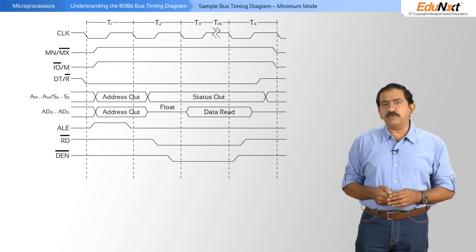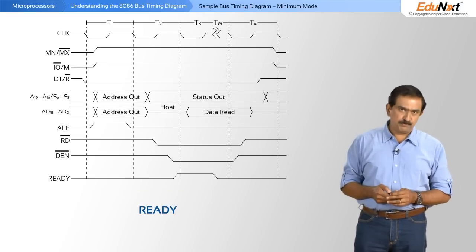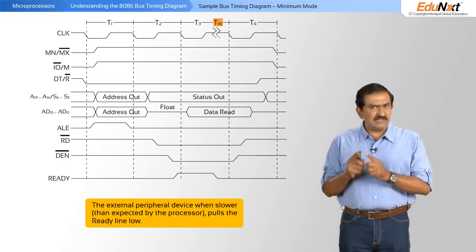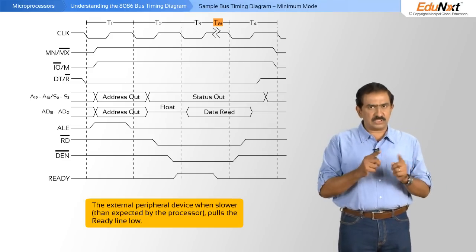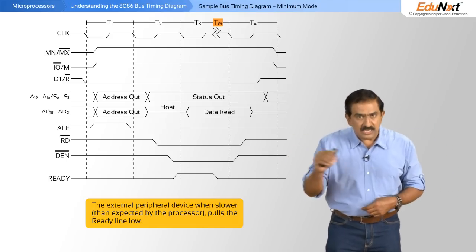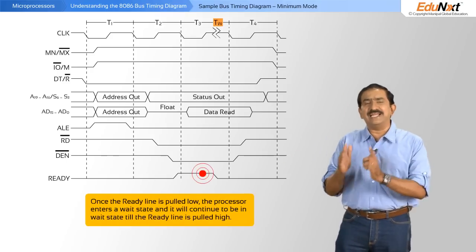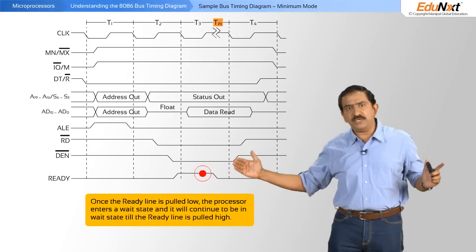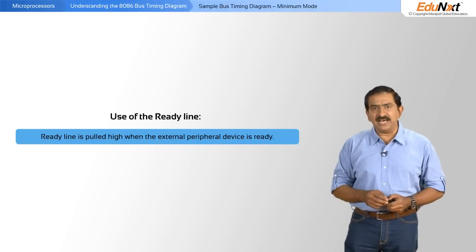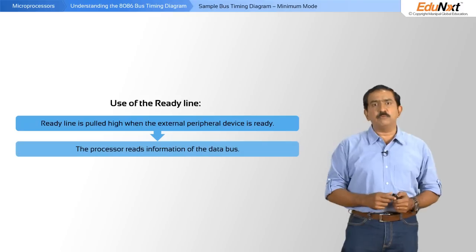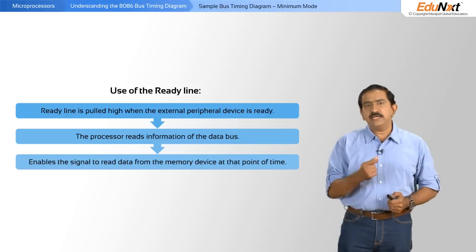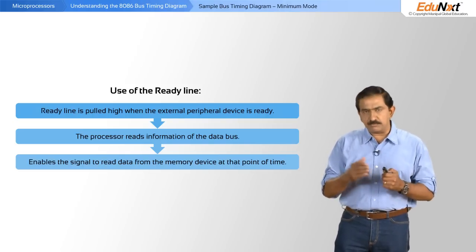The last signal in this set of waveforms is something called ready, which relates to the T-wait clock phase. If the external peripheral device is slower than the processor expects it to be, it is the responsibility of the external peripheral device to pull the ready line low. As soon as you pull the ready line low, the processor enters a wait state and will continue to be in wait state until the ready line is pulled high. Once the external peripheral device is ready, it will pull the ready line high. The processor then enables the data enable signal and reads data from the memory device at that point in time.